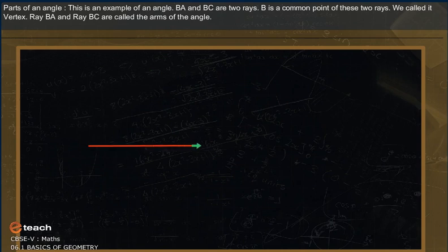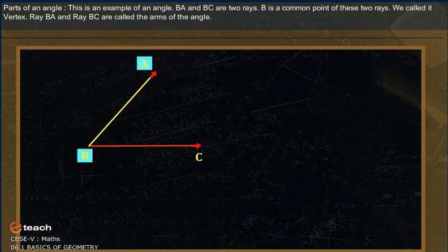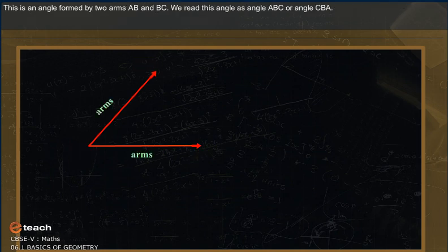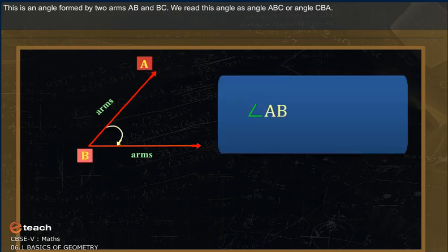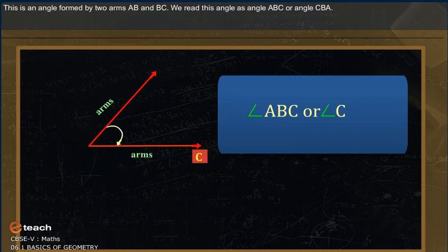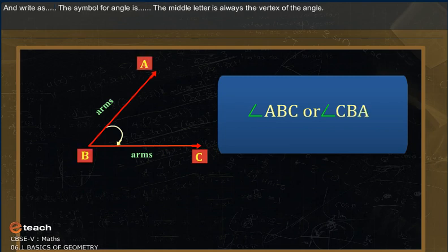Parts of an angle: This is an example of an angle. BA and BC are two rays. B is a common point of these two rays. We called it vertex. Ray BA and Ray BC are called the arms of the angle. This is an angle formed by two arms AB and BC. We read this angle as angle ABC or angle CBA. The symbol for angle is ∠. The middle letter is always the vertex of the angle.